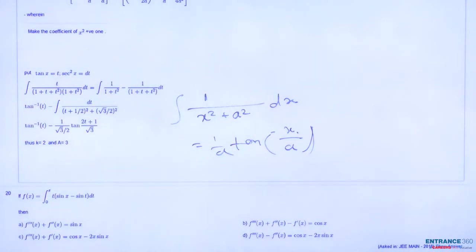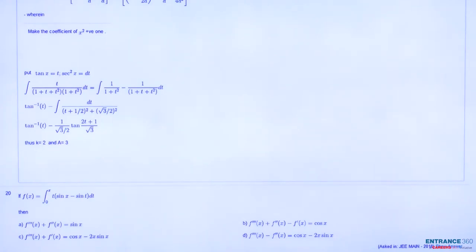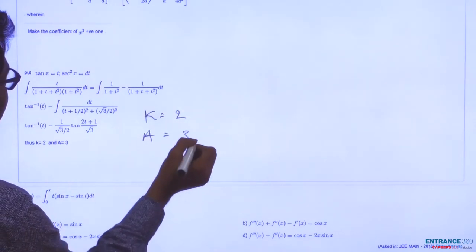By this formula we get our final answer. Now compare this, our final answer with the given question, and we get k equal to 2 and a equal to 3.